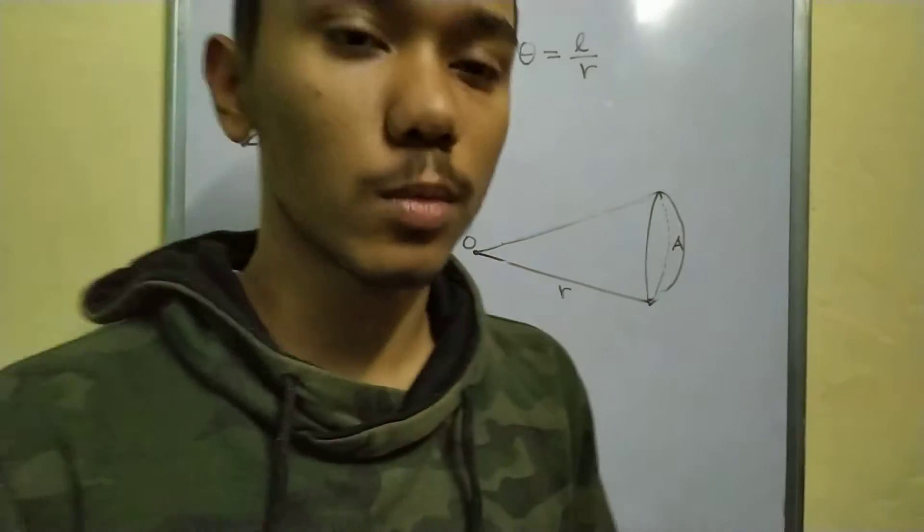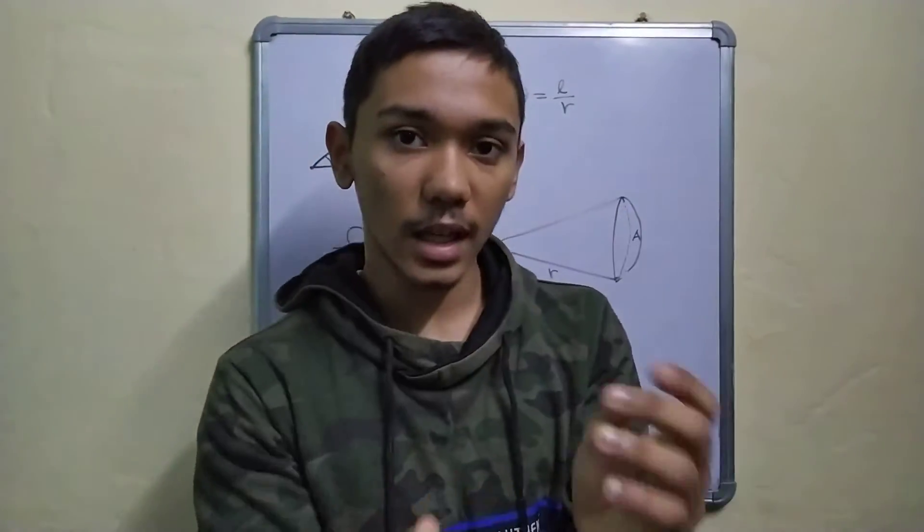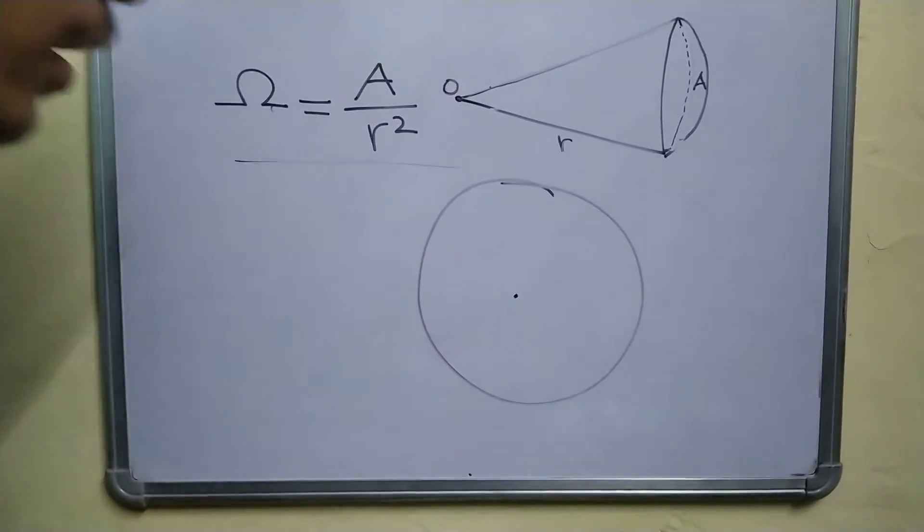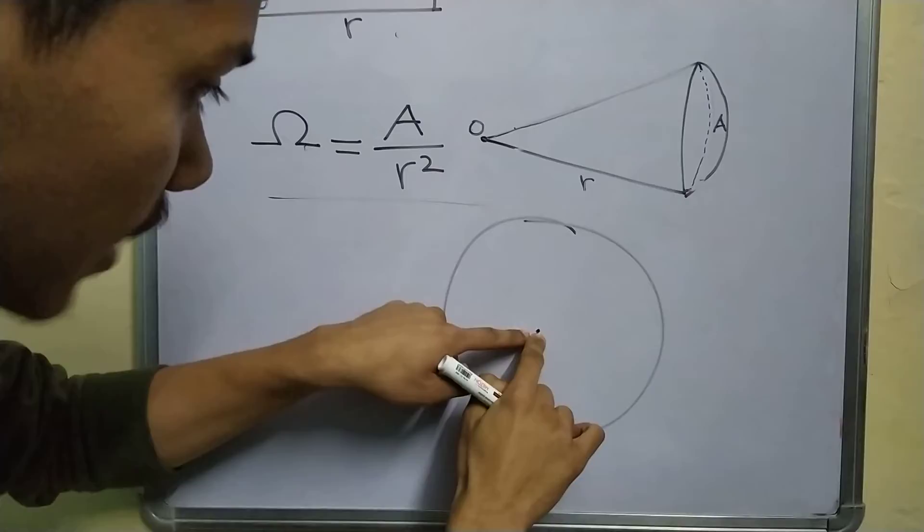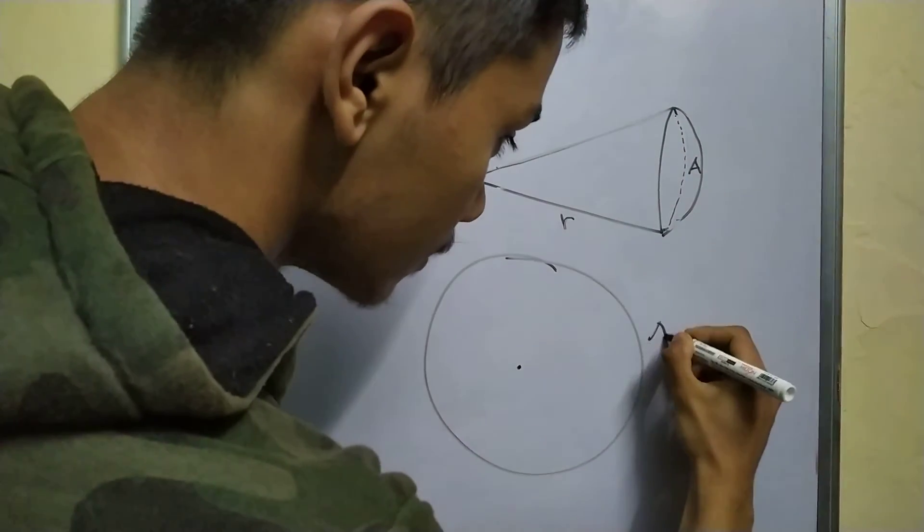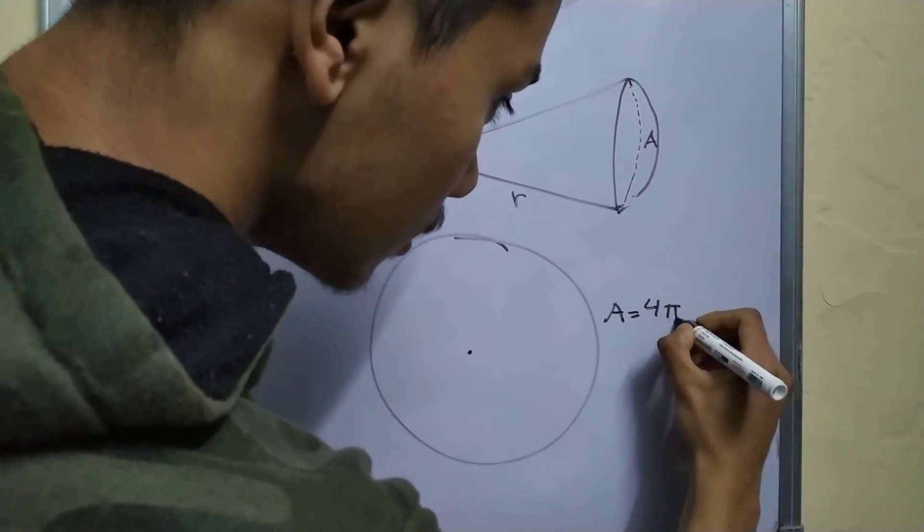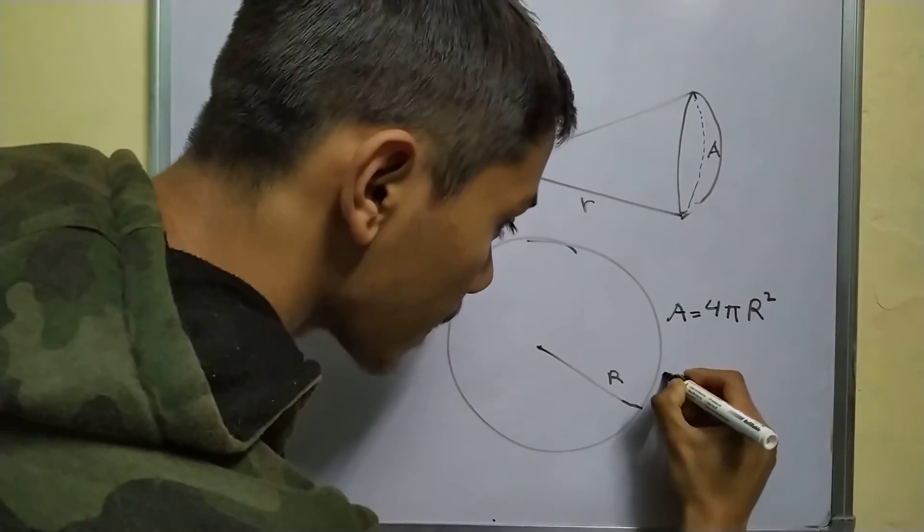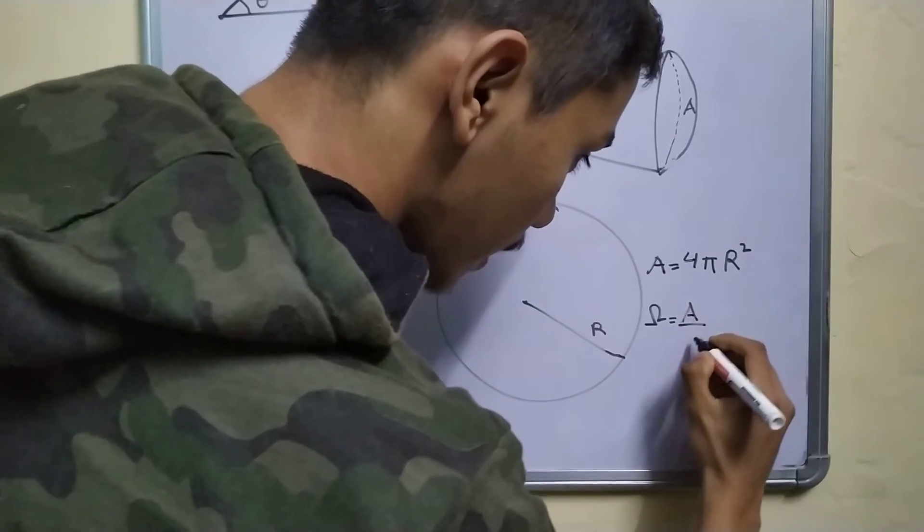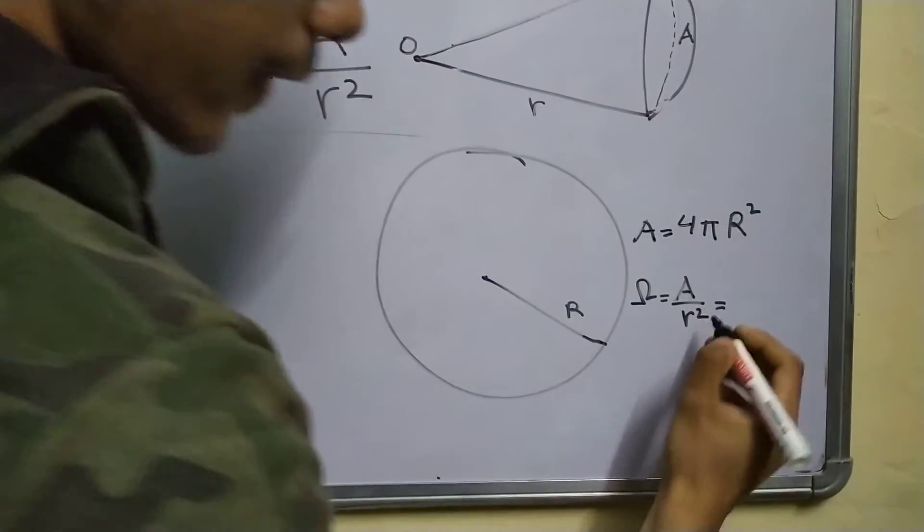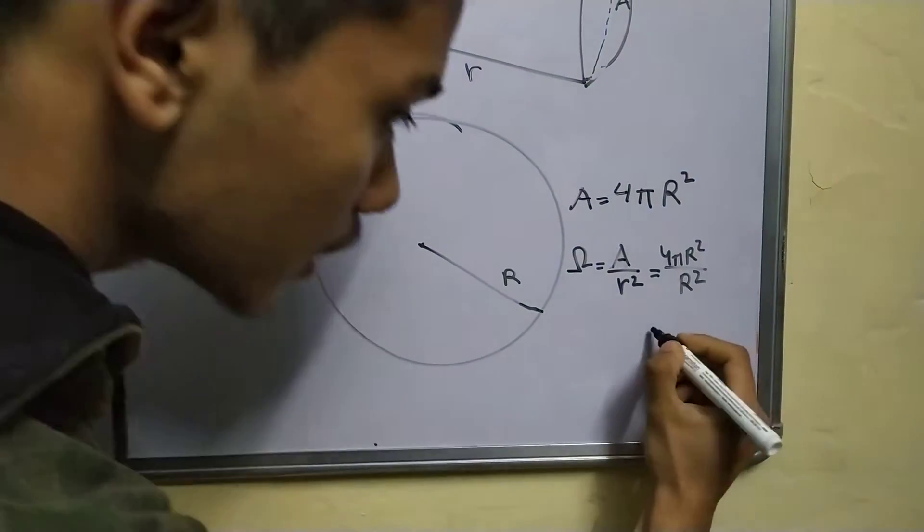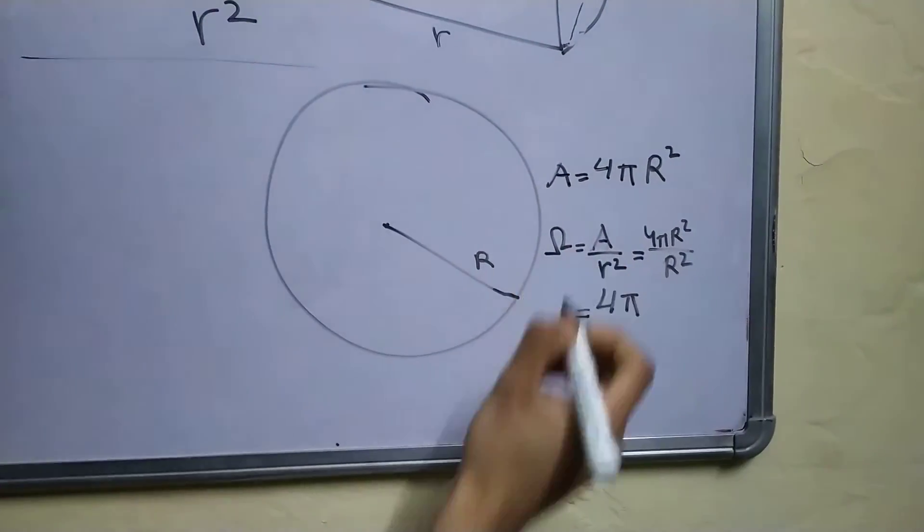Just a quick question. What is the solid angle subtended by an entire sphere at its center? This is a sphere. And we need to find out the solid angle subtended by this sphere at its center. The area of this entire sphere is 4 pi r square, where R is the radius. And therefore, the solid angle will be area divided by r square, which is equal to 4 pi r square divided by r square, which gives 4 pi and it's measured in steridians.